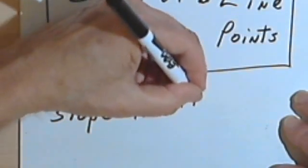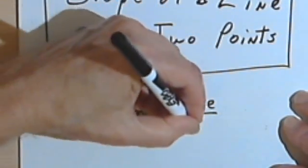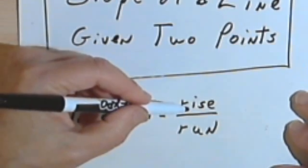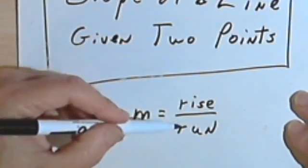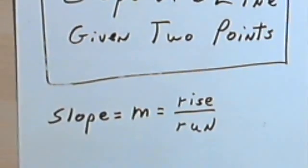And sometimes this is expressed as rise over run. In other words, how far you rise from one point to another, and how far over you run from the left to the right. So let's look at two points and see how this works.